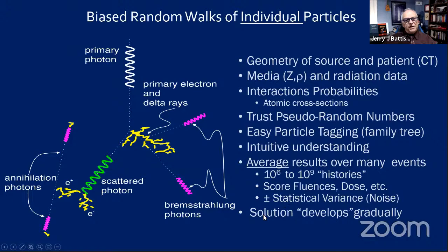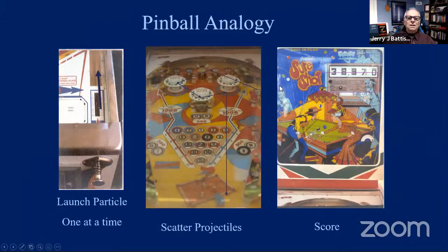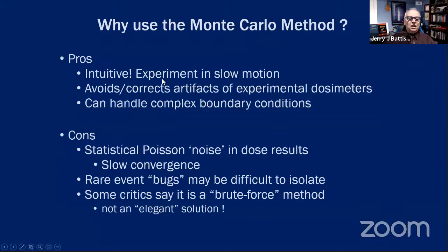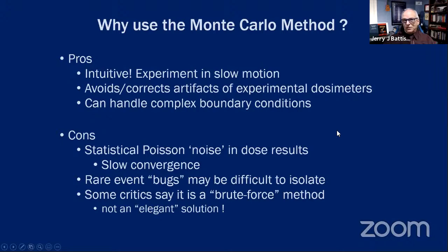You must average millions, if not billions, of particle histories to get an average dose, and the result will have a statistical variance. The solution doesn't appear instantly — it appears gradually as the number of histories grows. I like to use the analogy of a pinball machine: you launch a particle, let it scatter, and then score the dose. Why use Monte Carlo? It's intuitive, it's an experiment in slow motion, it can correct artifacts of experimental measurements, and it can handle complex boundary conditions. The downside is Poisson noise in the result and rare bugs that are hard to isolate.